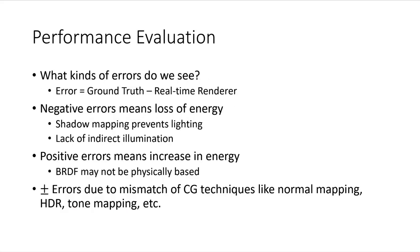So how did we evaluate our work? We use absolute error to help point us to defects in our algorithm. Negative errors indicate a loss of energy, such as when shadow mapping prevents the illumination of a surface. And positive errors mean an increase in energy, which means we may have problems with the BRDF. We try to eliminate as many types of errors possible by limiting techniques like normal mapping, HDR, tone mapping, etc.